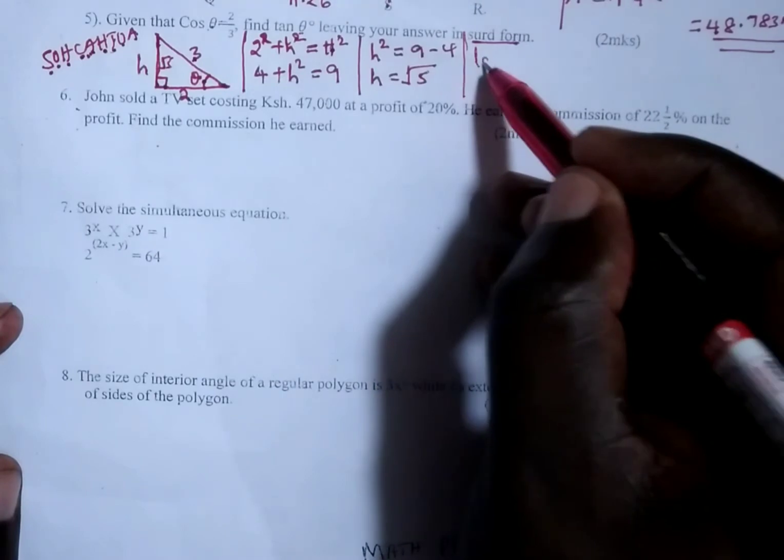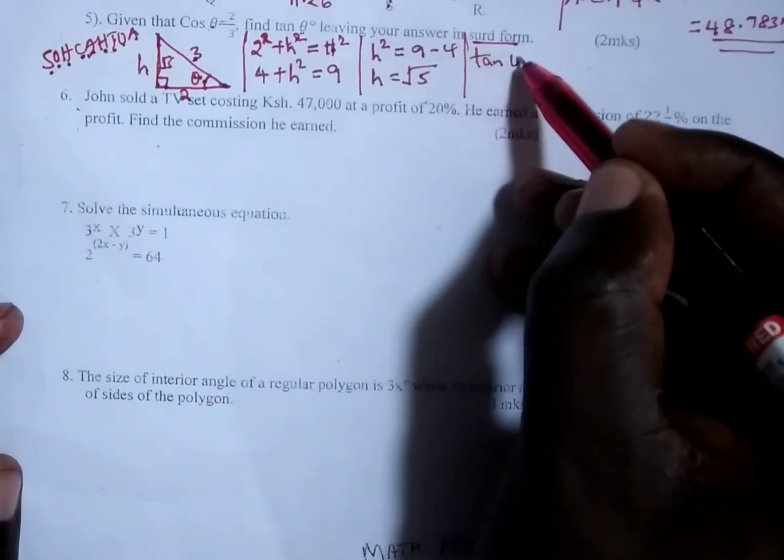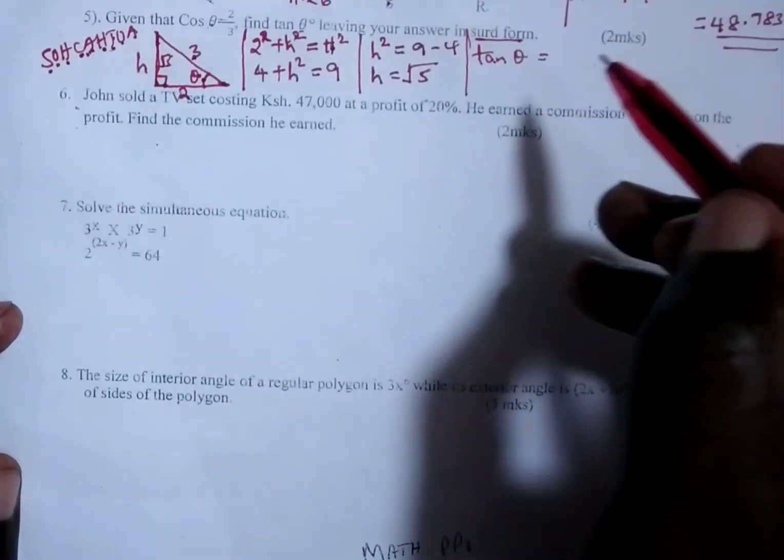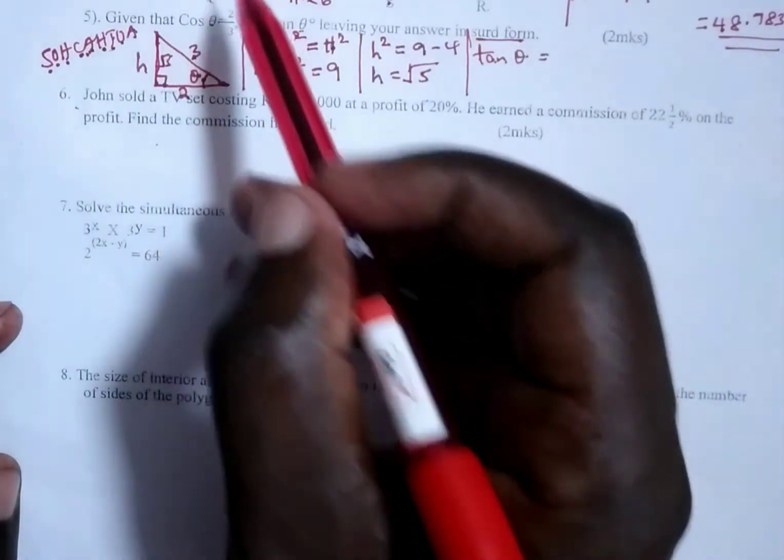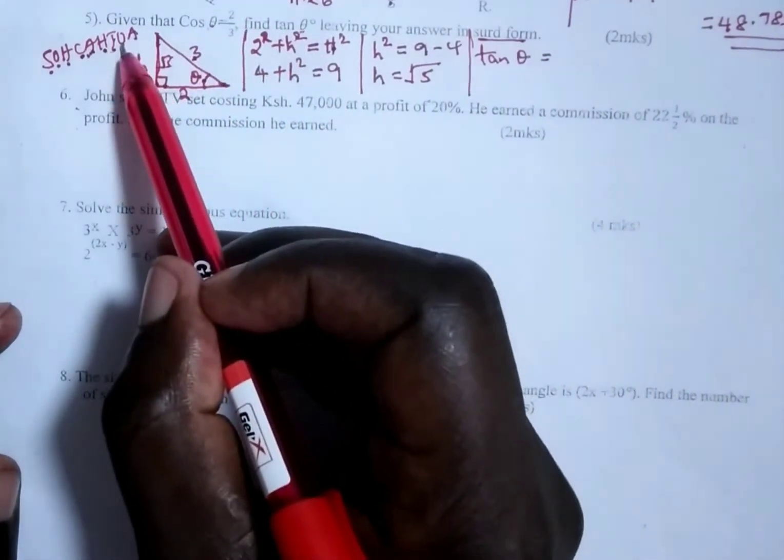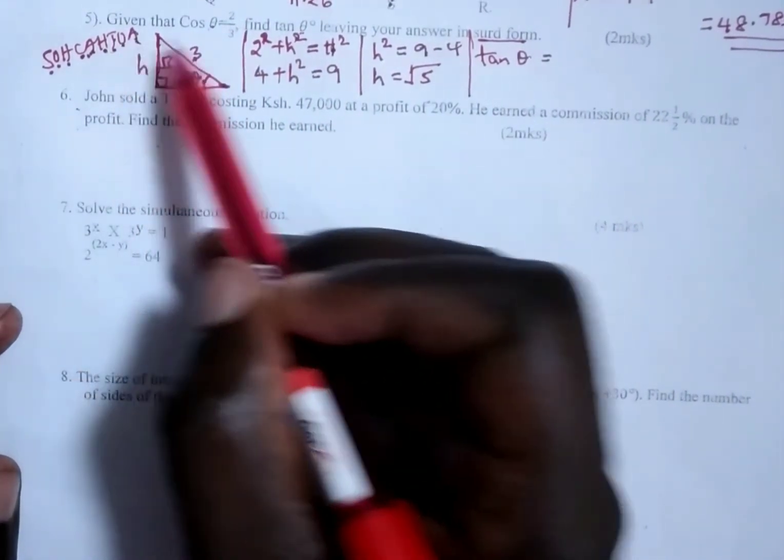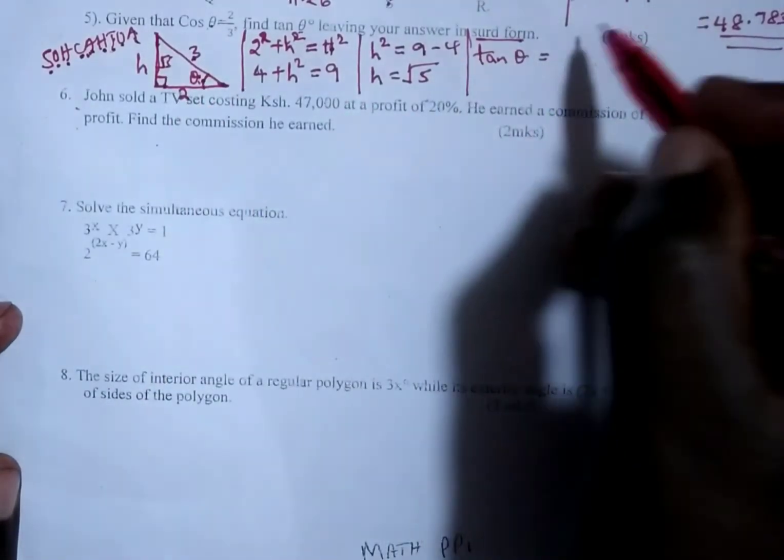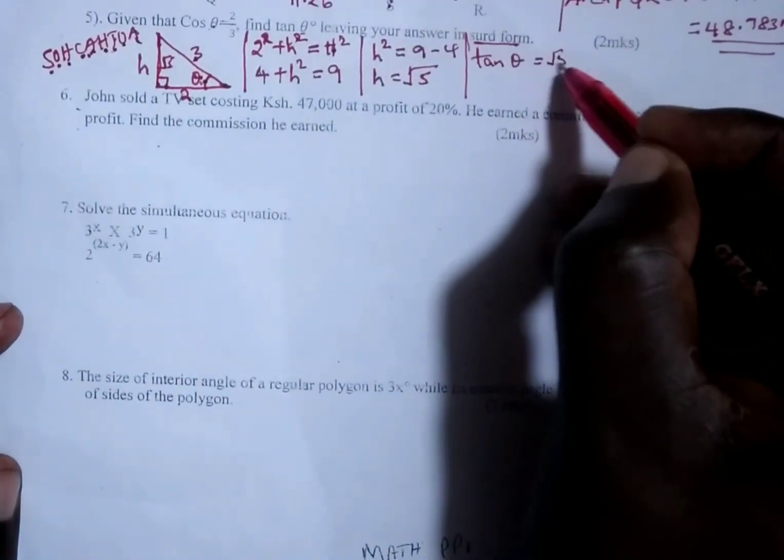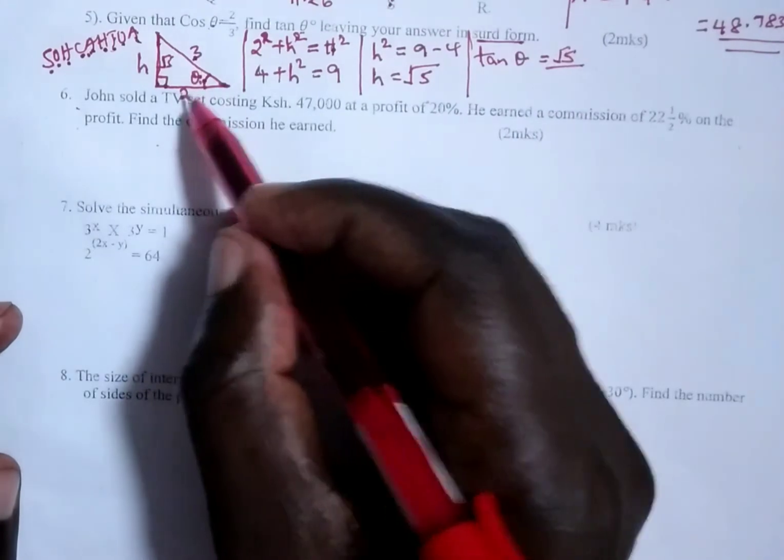From there now, we are able to find tan θ. And tan is given by the opposite over adjacent. The opposite of this angle is √5, and the adjacent is 2.